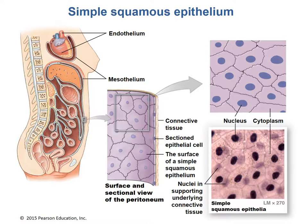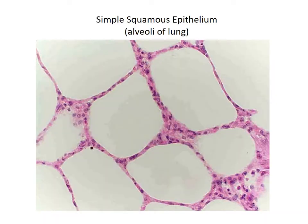Giving examples of each type — first would be simple squamous. Simple squamous is delicate and not protective. It is mostly involved in absorption or reduction of friction and is found in the alveoli of the lungs, the lining of blood vessels, and different serous membranes. In the alveoli of the lungs, note the flattened overall structure between each wall of the alveoli, allowing for adequate exchange of gases.